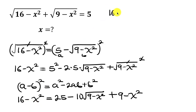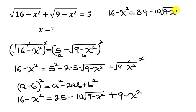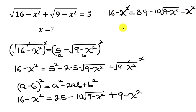Simplifying further, we have 16 minus x squared on the left equal to 34 minus 10 times the square root of (9 minus x squared) minus x squared. Notice that minus x squared appears on both sides, so they cancel out, leaving 16 equal to 34 minus 10 times the square root of (9 minus x squared).